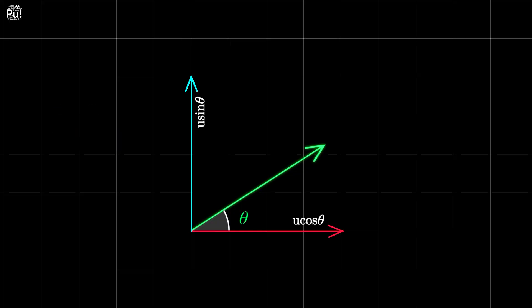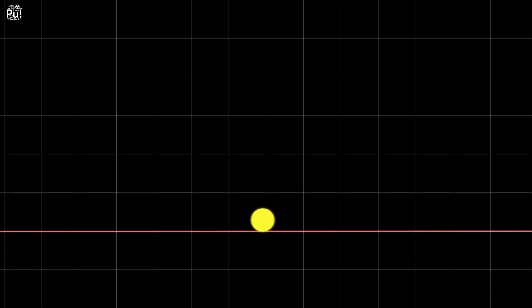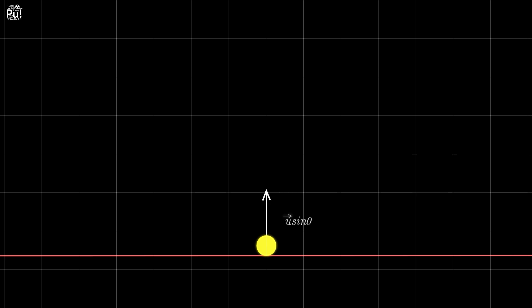From here, we treat the motion as two independent one-dimensional motions. Horizontally, the ball keeps moving at a constant speed. Vertically, it moves under gravity, going up, stopping for a moment, and coming back down. This separation helps us study the motion more easily.